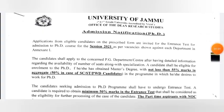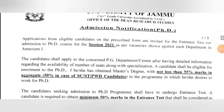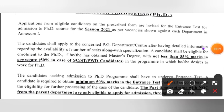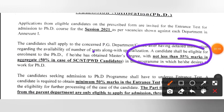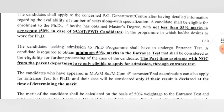This is the admission notification for PhD 2021-2022, session 2021. The eligibility criteria: Masters should be with a minimum of 55% marks aggregate. For SC/ST and PWD, it is 50% marks. The entrance exam will be 50%, and after qualifying you will appear for the interview.